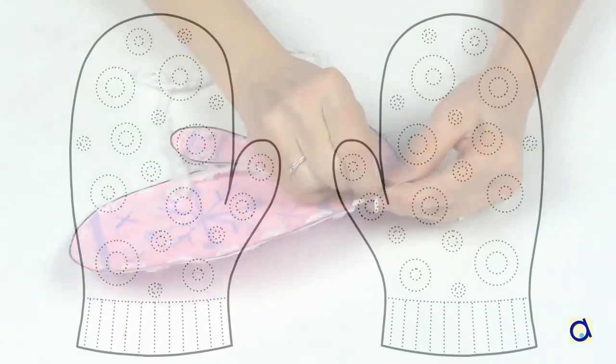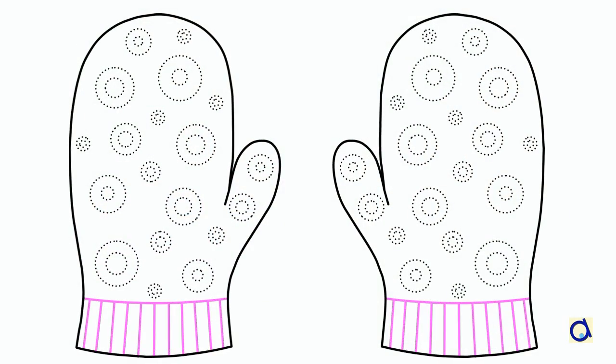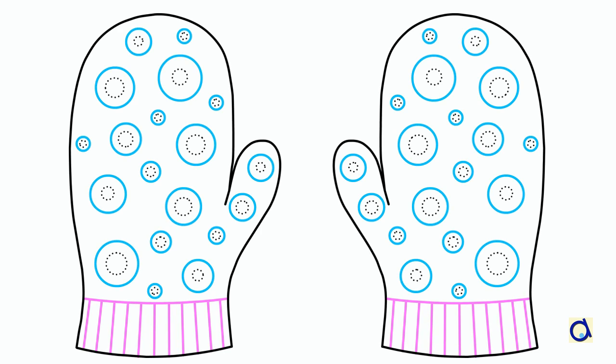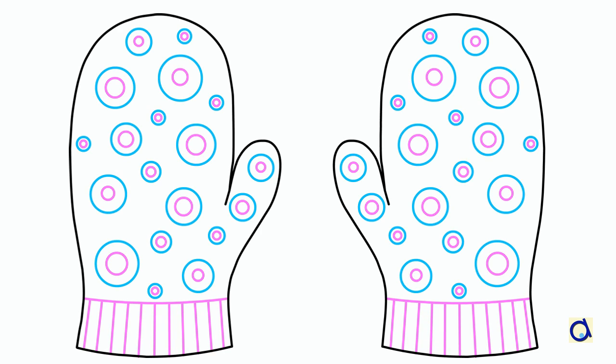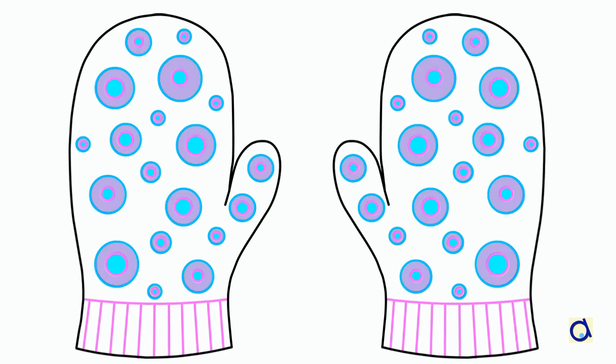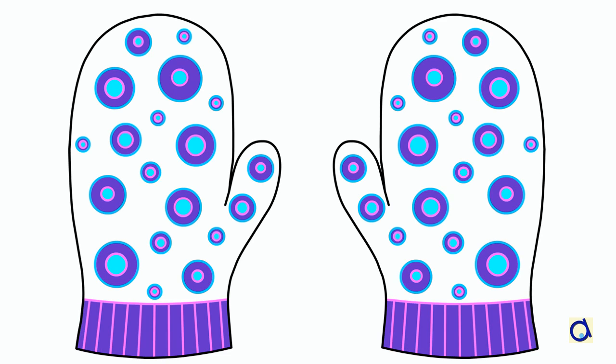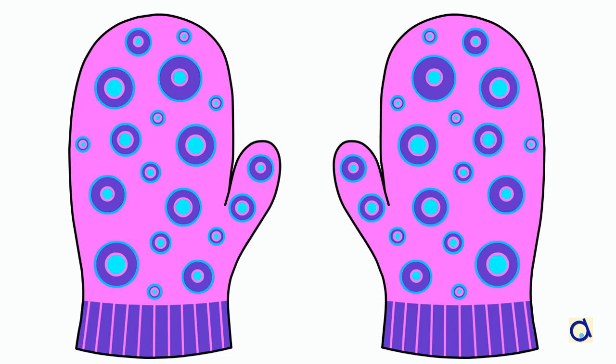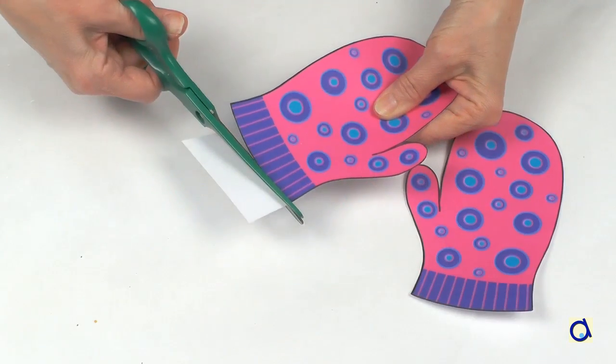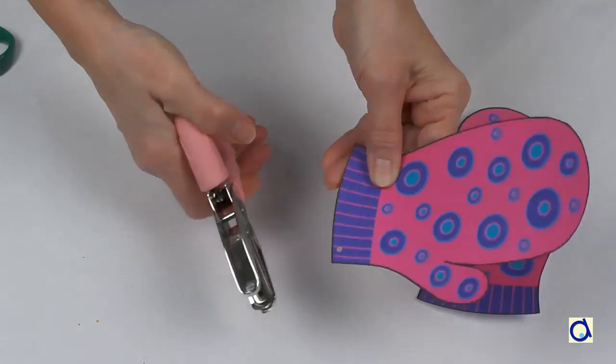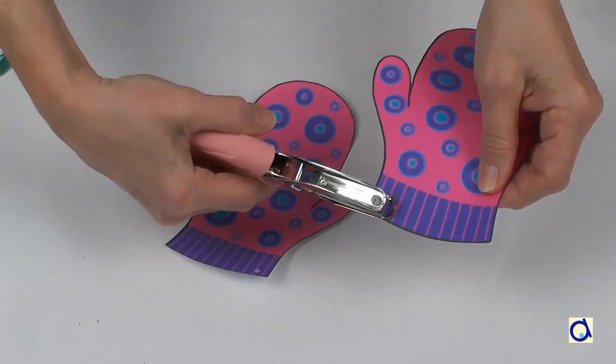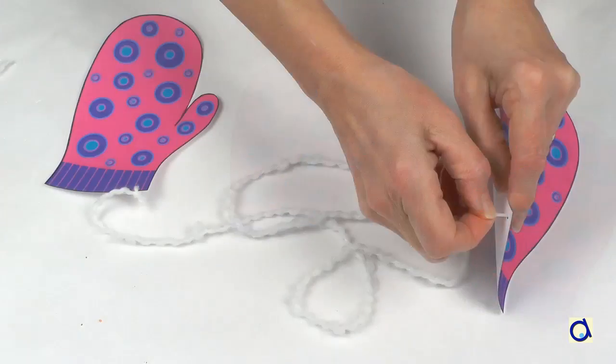And here is a way to use the smaller version of the mittens. Print your favorite pattern, trace along the dotted lines, and then color the mittens. When you are satisfied, cut out the mittens. With a one-hole punch, make a hole in each mitten and tie them together to form the pair.